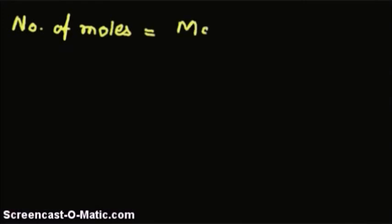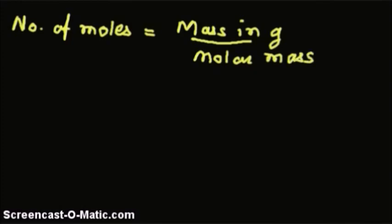So this is like a stoichiometry. So we shall first find the number of moles. Number of moles is equal to mass in gram divided by molar mass.